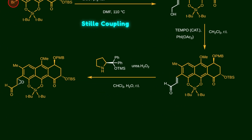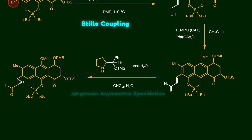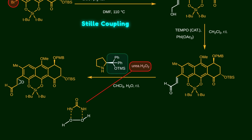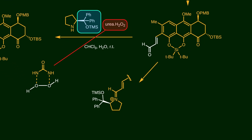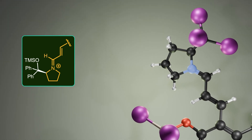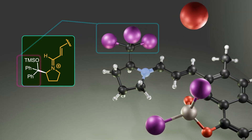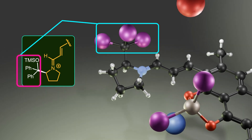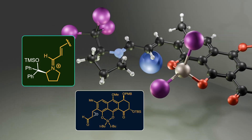The next step is asymmetric epoxidation of the double bond. Nicolaou's group used the Jørgensen asymmetric epoxidation to afford the epoxy aldehyde in a diastereoselective fashion. The oxidant is hydrogen peroxide-urea, which is easier to handle than free hydrogen peroxide. For inducing chirality, pyrrolidine is used — it has a bulky chiral center. First, pyrrolidine attacks the aldehyde to create an iminium ion. After that, hydrogen peroxide attacks the double bond, but approaches from only one face. In 3D space, the upper face of the planar double bond is blocked by the bulky groups, so the nucleophile prefers to attack from below the plane, creating the epoxide below the plane.